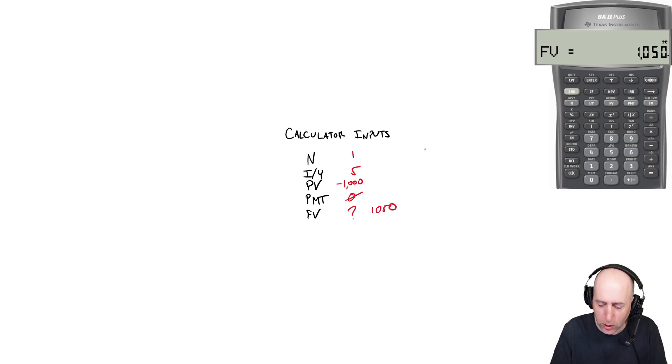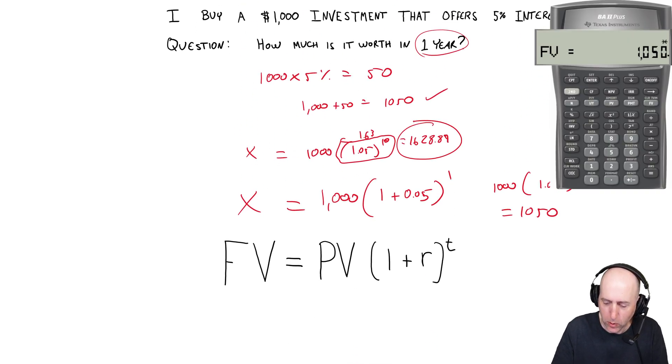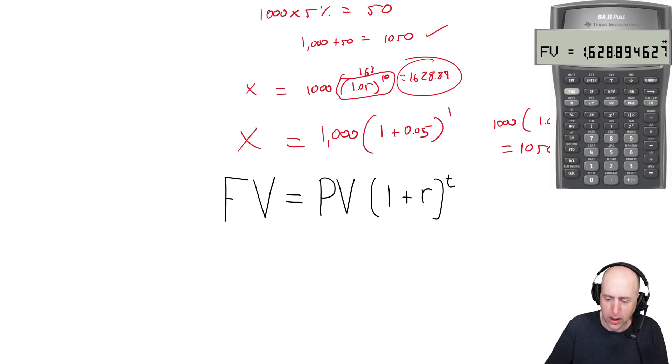Well, let's quickly do this for 10 and see if we match. So this is the number we're looking for. 1628.89. That's what we got with our formula. Let's see. Now, the good thing about a financial calculator is we've already got all the inputs in. All I have to do is put 10 in for N and all the other numbers are in. So now I'm going to compute FV and I get FV is 1628.89 and sure enough, it matches.